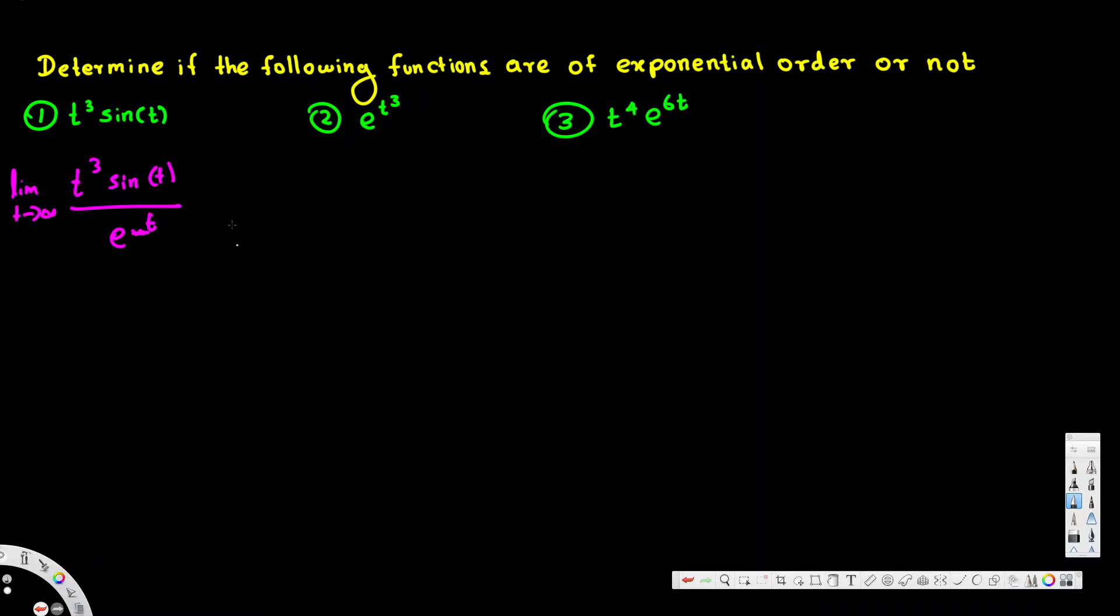It's not going to go above that, so it's basically t cubed times one, so just t cubed. But if you look at the denominator, we have e to the power of something times t. For example, if I put one there,